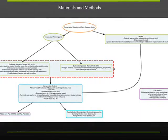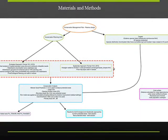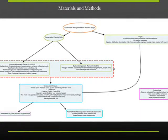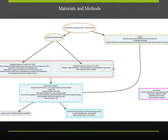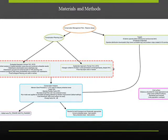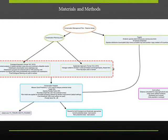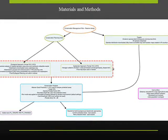Furthermore, terrestrial ecoregions were added to the layer. Thereafter, MOXN was run where 50% was chosen as a target for all species and 10% was chosen as a species penalty factor.